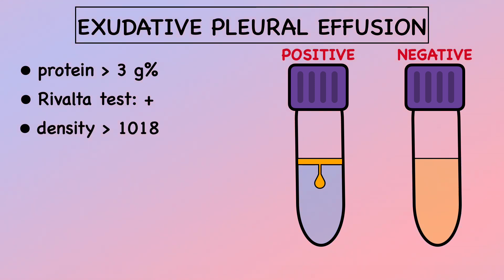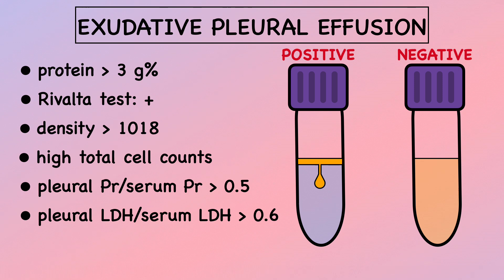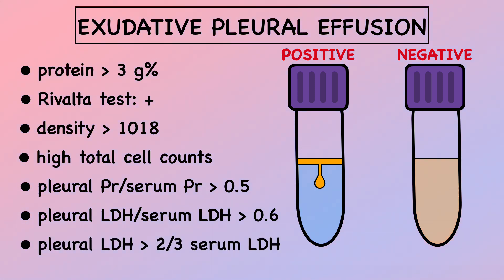Additional characteristics of exudative pleural effusion include density greater than 1.018, high total cell counts, a pleural fluid protein to serum protein ratio greater than 0.5, a ratio of pleural fluid lactate dehydrogenase to serum lactate dehydrogenase greater than 0.6, and pleural fluid lactate dehydrogenase greater than two-thirds of the upper limit of normal for serum lactate dehydrogenase.